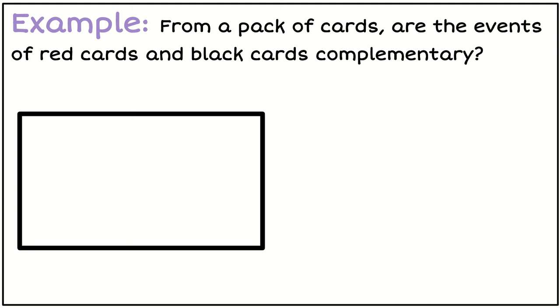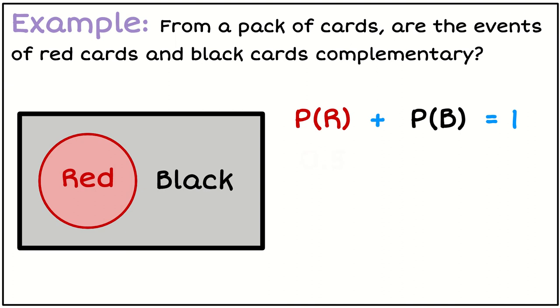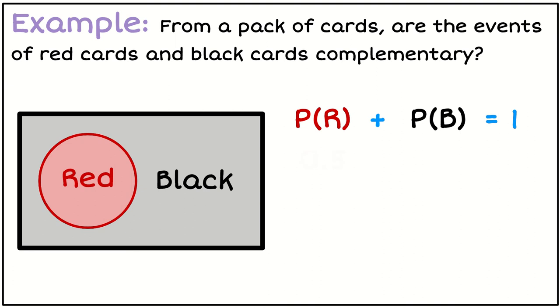So looking at this example, we want to know are the events red card and black card complementary events. So I'm going to look at the probability of the red card plus the probability of the black card and see does it equal 1. So half of the cards are red, half of them are black. Therefore we can say yes, these are complementary events. There is nothing that one group has that is in common to the other, and the probabilities add to 1.